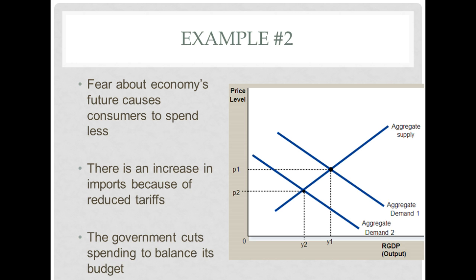If the government cuts spending to balance its budget, that is a decrease in government spending and therefore a decrease in RGDP, which results in a decrease in aggregate demand.